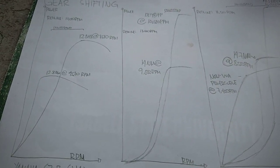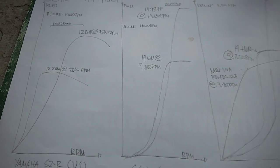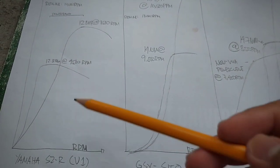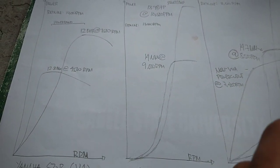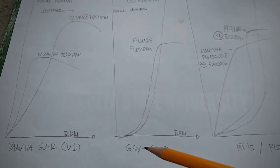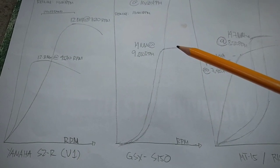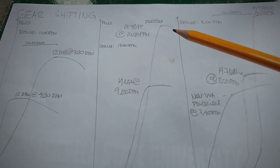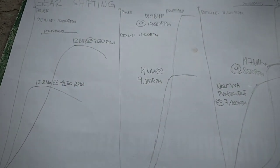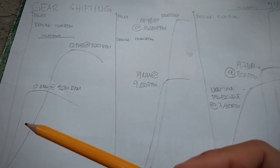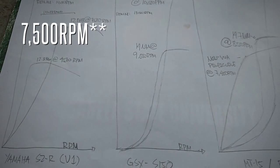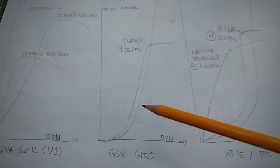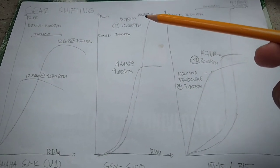If sinabi natin yung low revving bike, at the very lowest portion ng RPM range, nag-de-deliver ng power yung motor. Kagaya ni SZR, at 4,500 RPM you already have 12.8 Nm of torque. And then kapag high revving yung motor mo, kagaya ni Suzuki GSX, your maximum torque shows up at 9,000 RPM and your maximum power shows up at 10,500 RPM. In comparison sa isang low revving na motor, which is maximum torque at 4,500 RPM and maximum power at 7,500 RPM. So itong mga low revving na motor, at the lower part of the RPM range, lumalabas yung lakas ng makina nila.